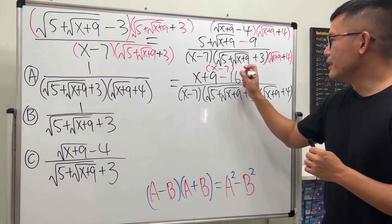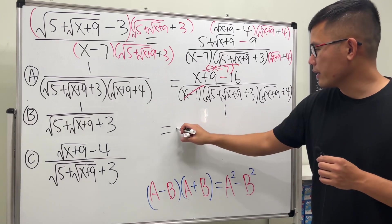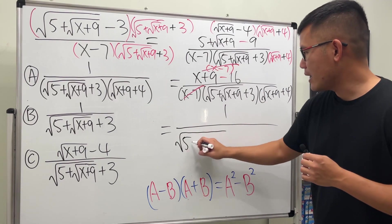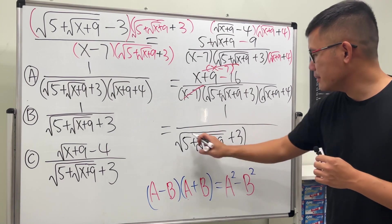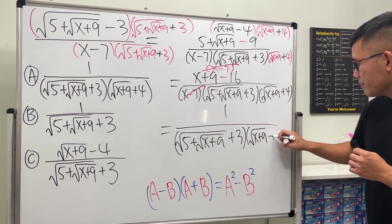So cancel, cancel! And ladies and gentlemen, we only have a 1 on the top, and we have this, which is (√5 + √(x+9) + 3) times (√(x+9) + 4).